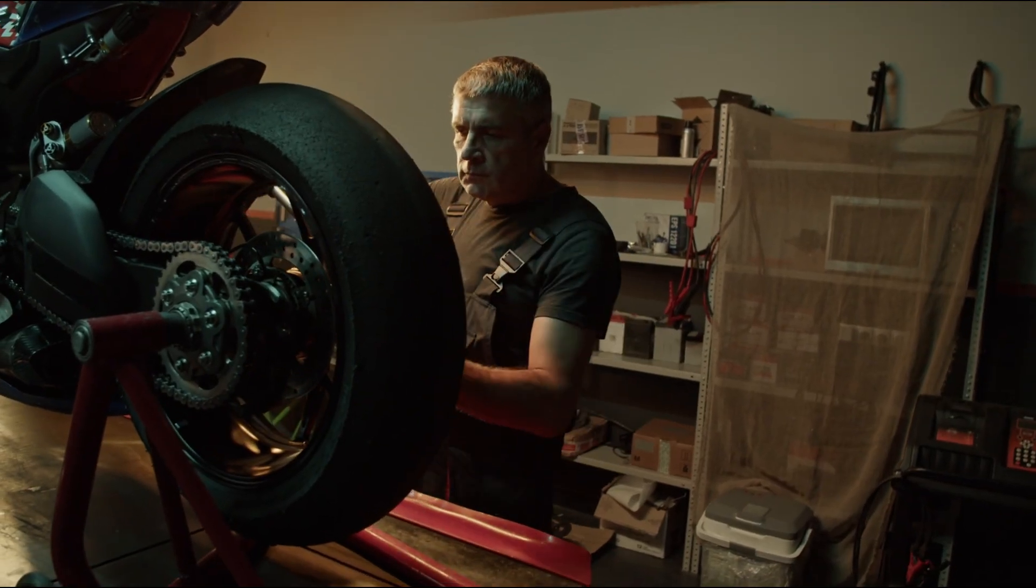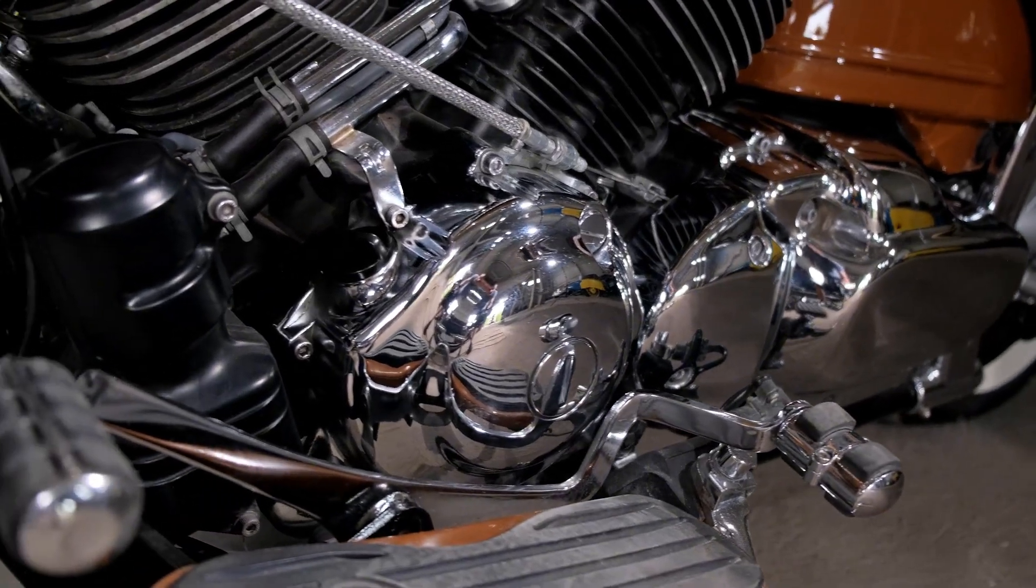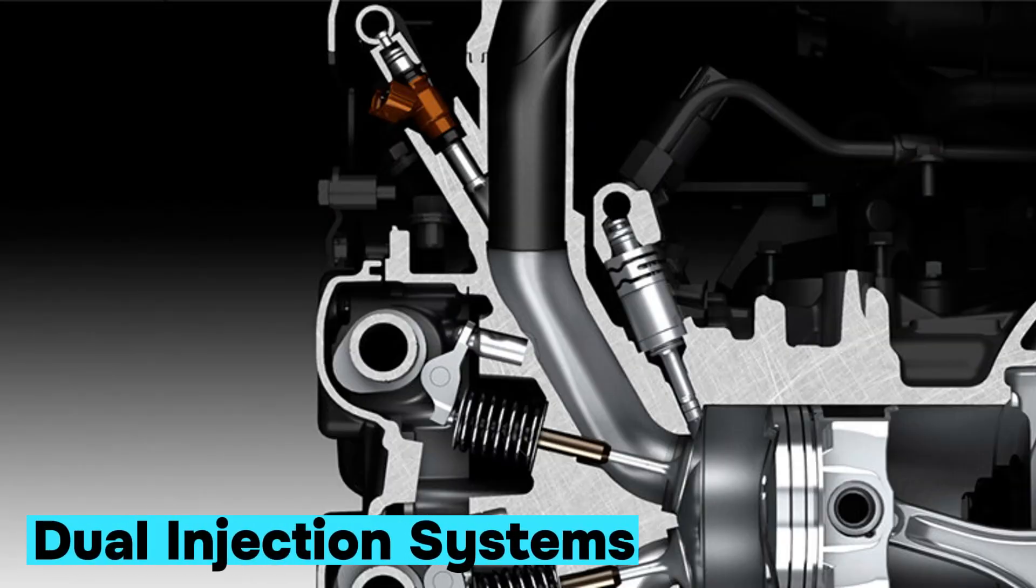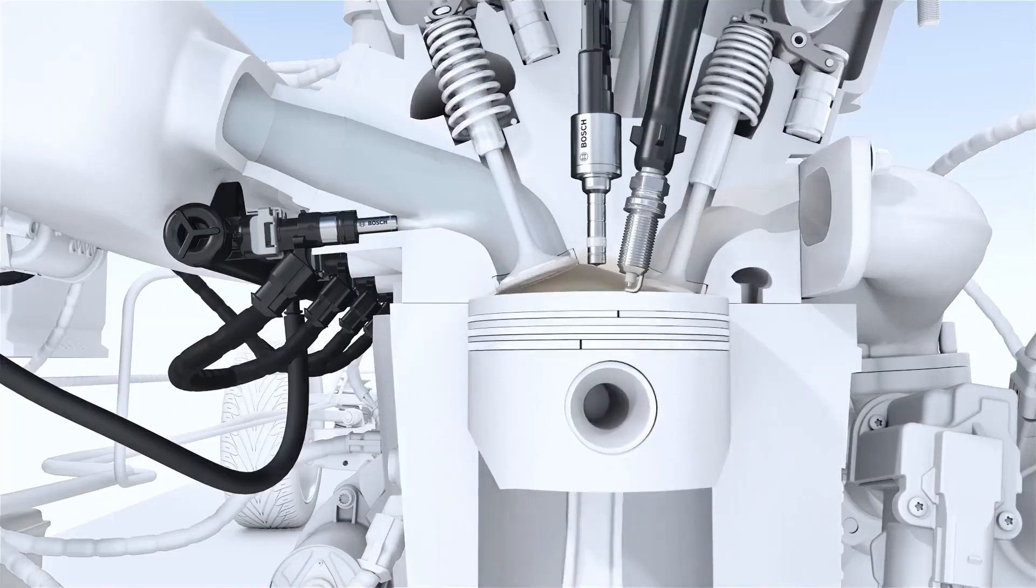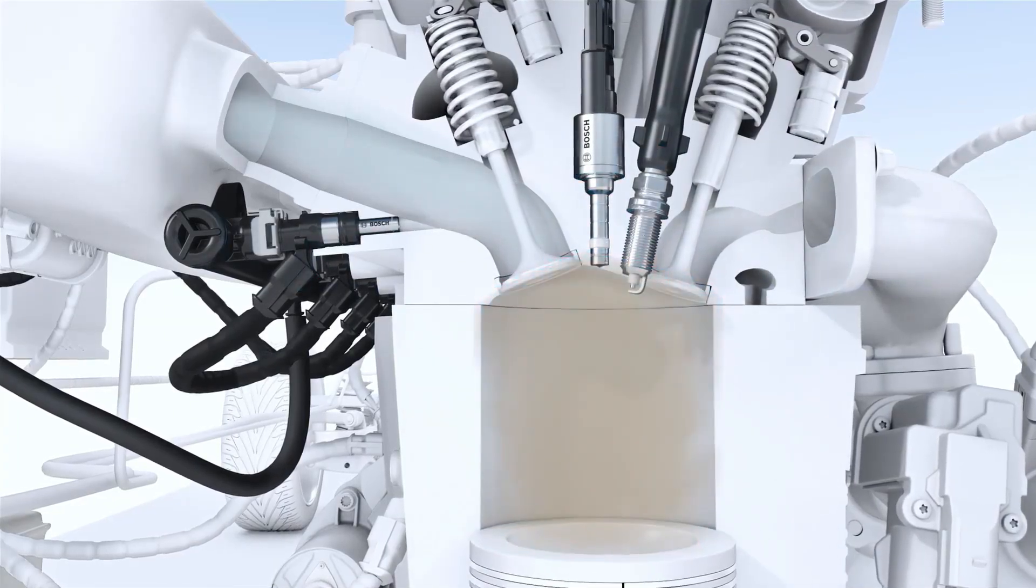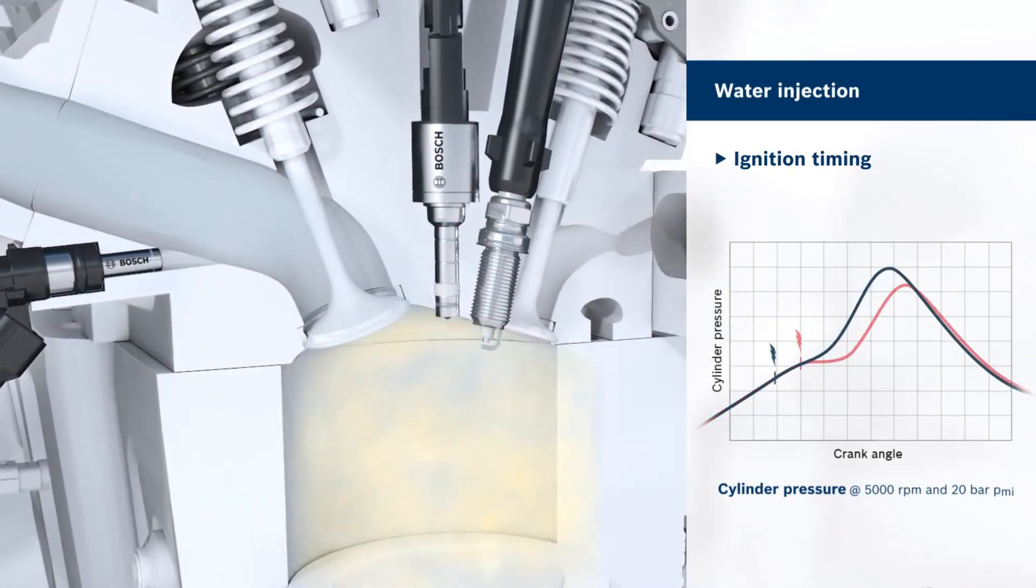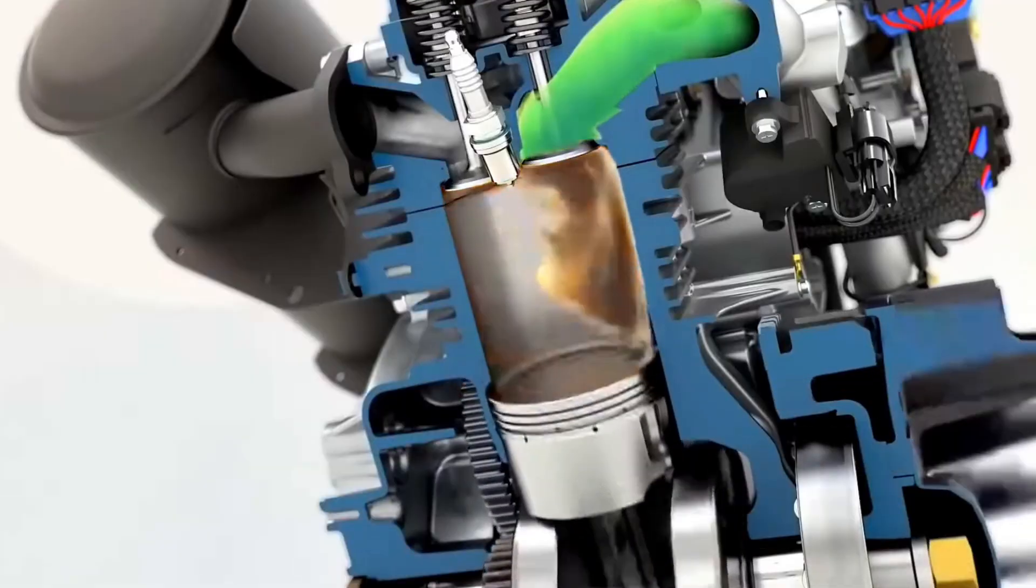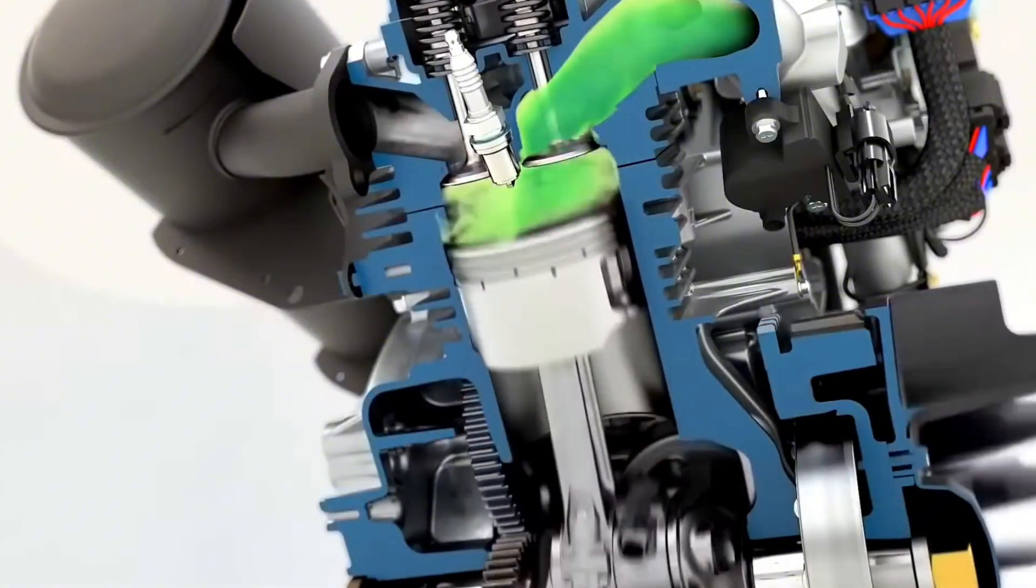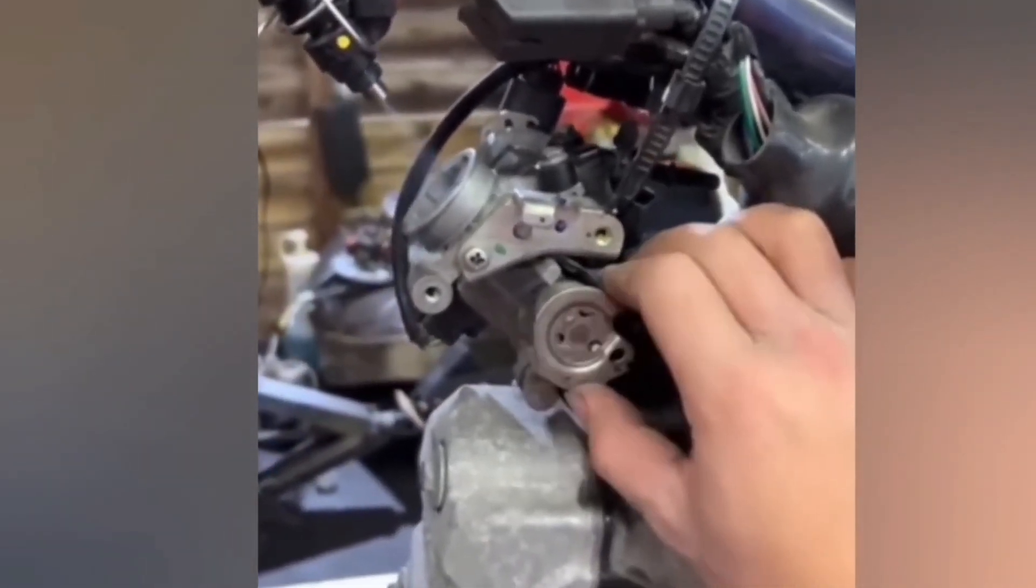But what if I told you some modern engines don't choose between the two? They use both systems at the same time. Dual injection systems combine port injection and direct injection in a single engine. At low speeds or light throttle, the engine uses port injection, giving the fuel time to mix with air and even helping clean the intake valves. But when you crank the throttle or demand full power, direct injection kicks in, spraying fuel right into the combustion chamber for cooler, more powerful, and more efficient combustion.